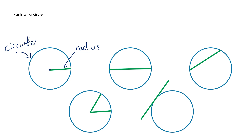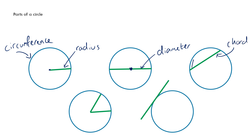This green line goes all the way across the circle through the center, so that is the diameter. This green line here goes all the way across the circle but doesn't go through the center, so that is a chord. The shape enclosed by the chord is known as a segment.